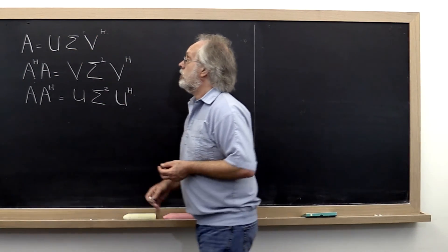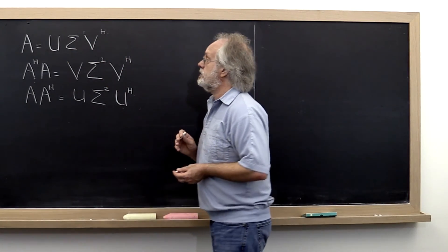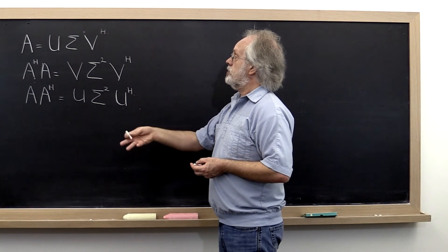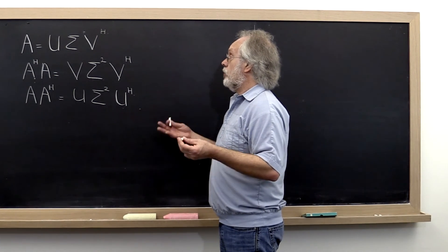where U and V are unitary matrices and Sigma is a diagonal matrix with the singular values ordered from largest to smallest and all non-negative.